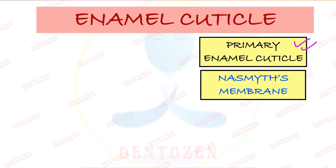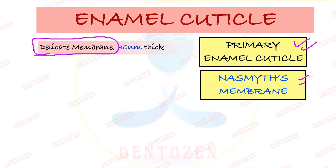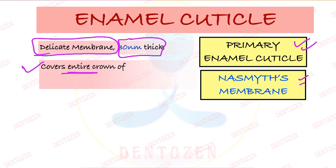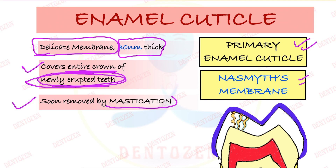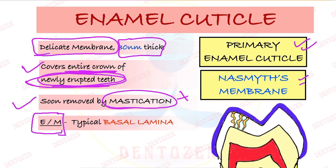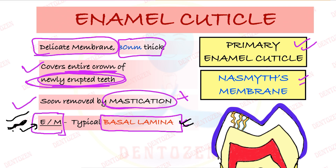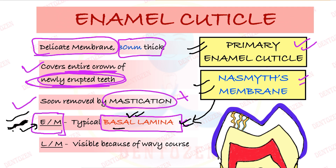For your answer: primary enamel cuticle, also known as Nasmyth's membrane, is a delicate membrane 30 nanometers thick. It covers the entire crown of a newly erupted tooth, and is soon removed by mastication. Under electron microscope, studies indicate this membrane resembles a structure called basal lamina — the membrane below oral epithelium in the oral mucosa chapter. This Nasmyth's membrane has a structure similar to basal lamina, which can be a viva question. It is also visible under light microscope due to its wavy course.